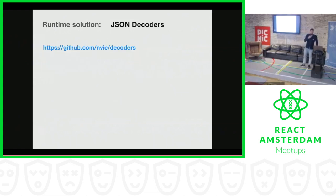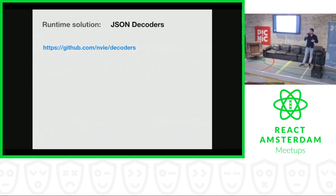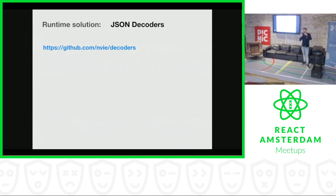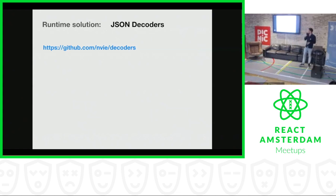Another way to check your JSON at runtime is by using something called JSON decoders. A JSON decoder is a principle where you have a function — it takes your JSON as input, checks if the JSON conforms to the types you specify in the function, and will return the value with the right type if it's correct, or it will throw an error which you can handle.